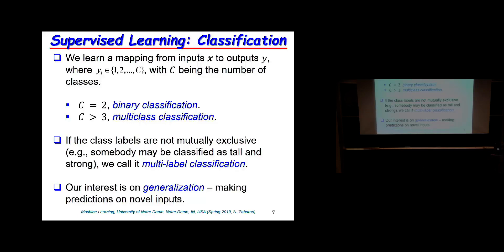In supervised learning, I give you a training set with inputs and corresponding outputs telling you what class each x belongs to. The number of classes — say C equals 2 — is binary classification; greater than that is multi-class. You can also have multi-output classification where you simultaneously assign something to many non-conflicting classes. The key concept here is generalization: once you have trained a model, if I give you an unseen input x, can you tell me what class it belongs to? We call that the test data set.